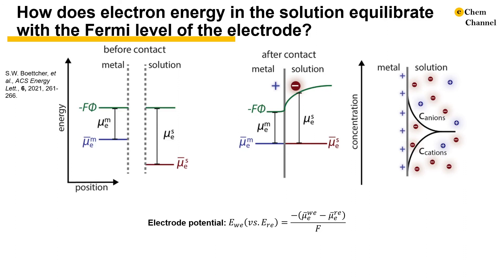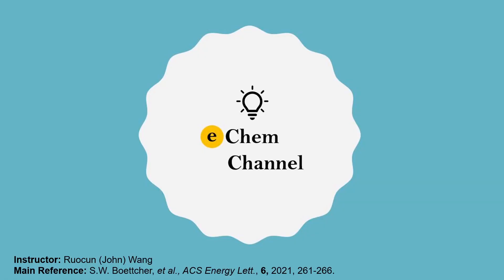Additionally, we can define the electrode potential as the free energy change divided by the electron charge associated with moving an electron from a reference electrode to the working electrode, and solution potential as the free energy change divided by the electron charge associated with moving an electron from a reference electrode into the bulk of a solution via a redox reaction. I hope these explanations help you gain more appreciation for potentials in electrochemistry. For more information, please refer to the original paper. We maintain this channel only on the weekends. The videos in our Ecamm channel are only for educational purposes and knowledge sharing. Please subscribe, share, and like our videos to support our channel. Thank you for watching.